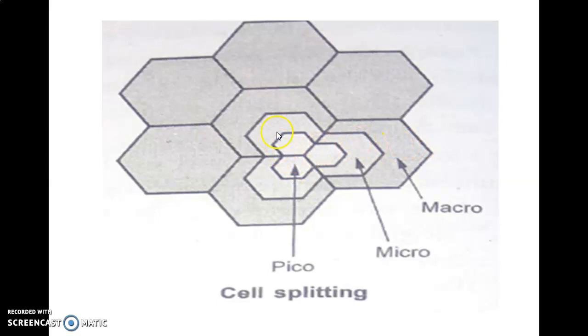Here you have the bigger cell being split into smaller cells, and again smaller cells. The smallest becomes pico, the next becomes micro, and this is a macro cell.